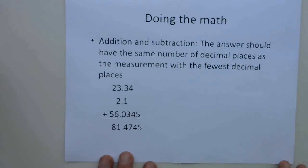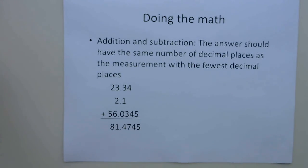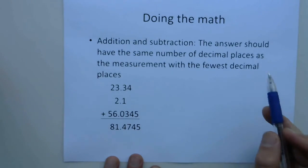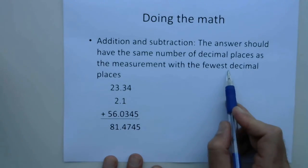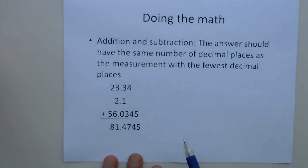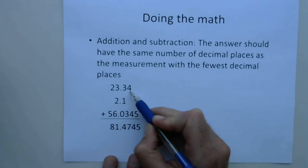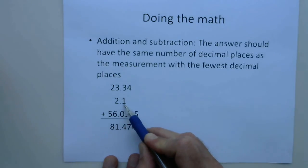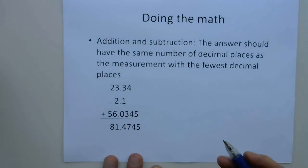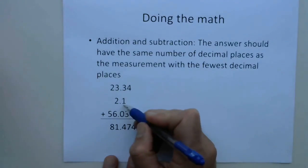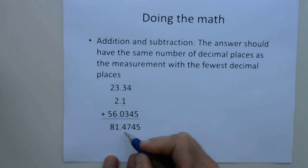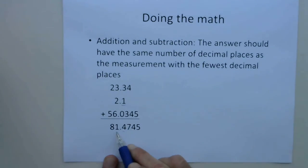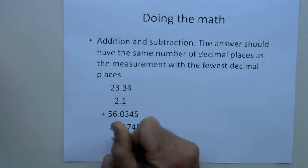The rule with addition and subtraction is a little bit different. It's not about the total number of significant figures — it's about the number of decimal places at the end of the measurement. Whichever number has the fewest decimal places, that's where you round. So adding three numbers where one has two decimal places, one has one, and one has four, we round our answer to just one decimal place. The next digit is a seven, so we round up — giving us 81.5.